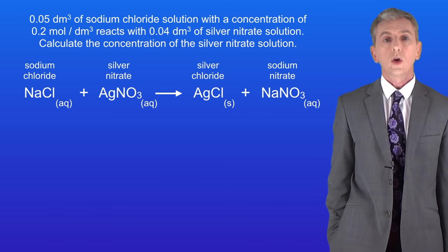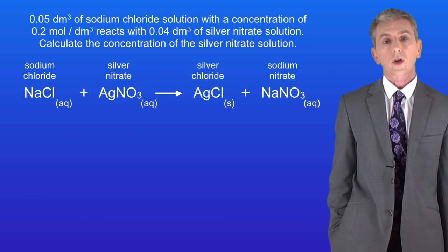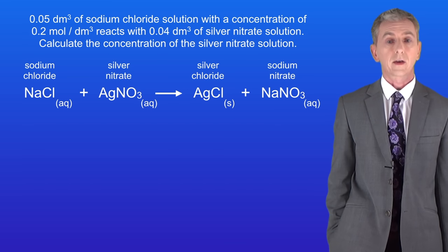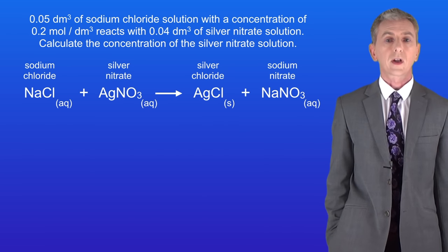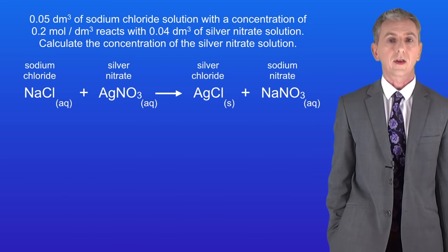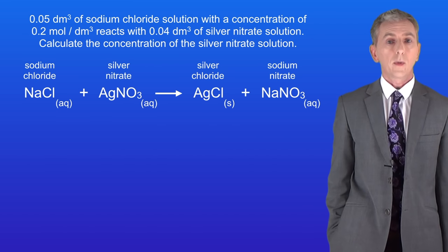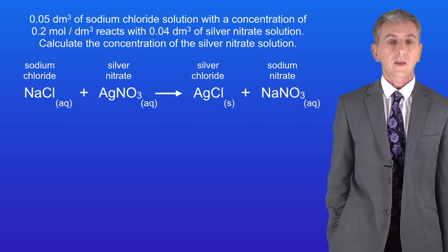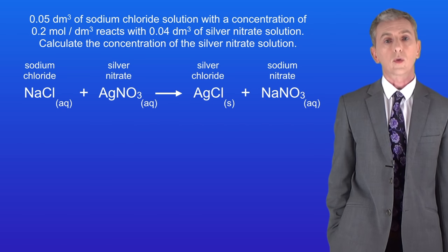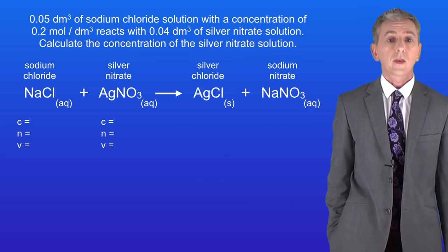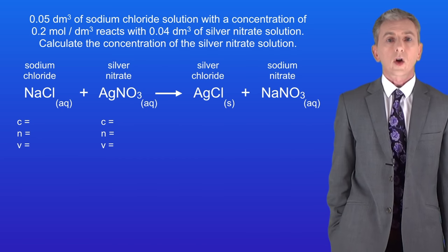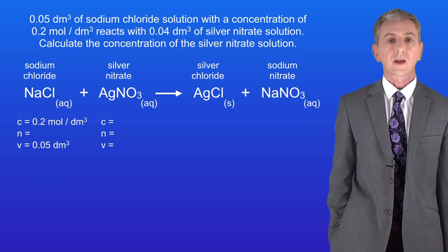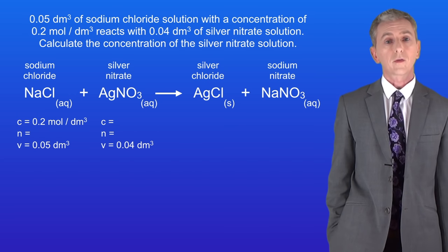Take a look at this question. 0.05 decimetres cubed of sodium chloride solution with a concentration of 0.2 moles per decimetre cubed reacts with 0.04 decimetres cubed of silver nitrate solution. Calculate the concentration of the silver nitrate solution. Looking at the equation we can see that one mole of sodium chloride reacts with one mole of silver nitrate — we're going to use that fact later. The first thing we need to do is write C equals, N equals, and V equals under both reactants, then enter the information given: concentration of sodium chloride is 0.2 mol/dm³, volume is 0.05 dm³, and volume of silver nitrate is 0.04 dm³.